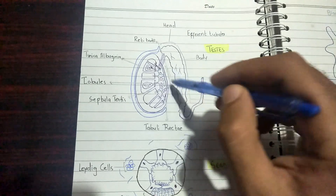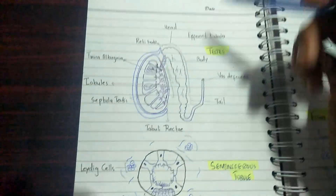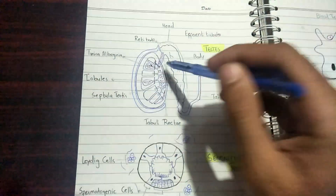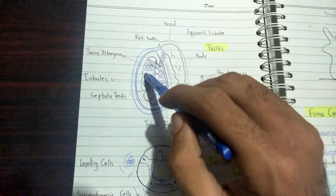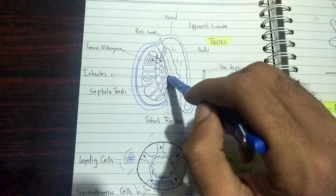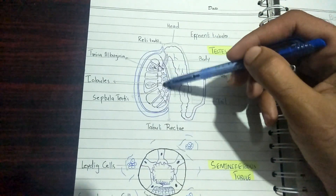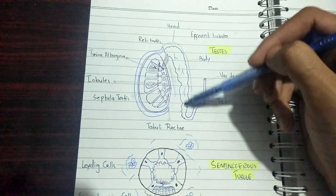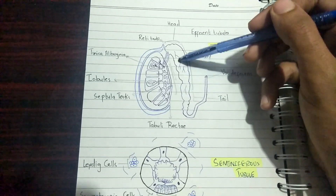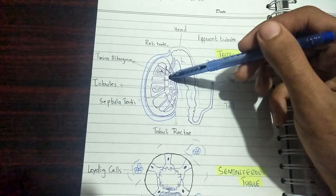Sperms are formed in the seminiferous tubules. They are then transported from the seminiferous tubule to the straight tubule, and from there to the rete testis. From the rete testis, they travel toward the epididymis, which is a large structure.